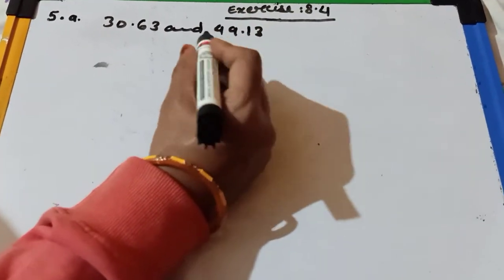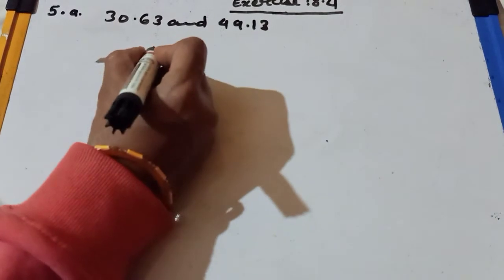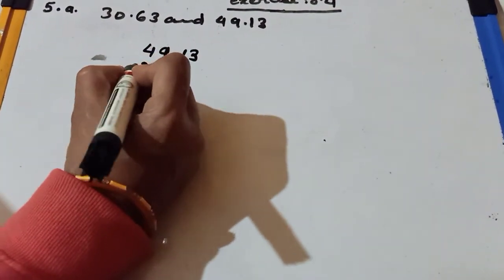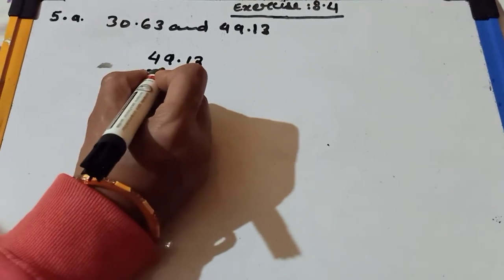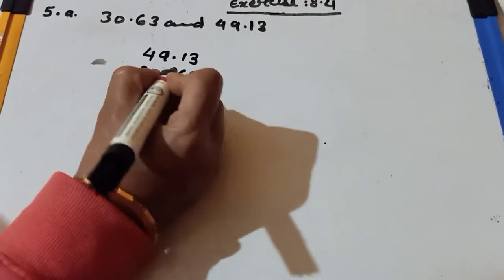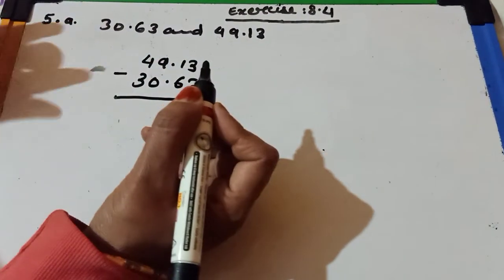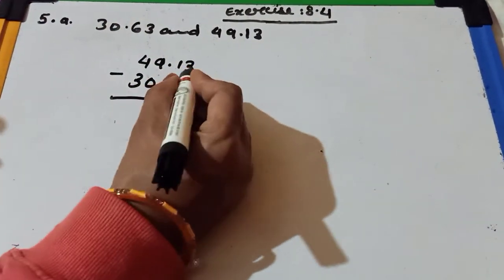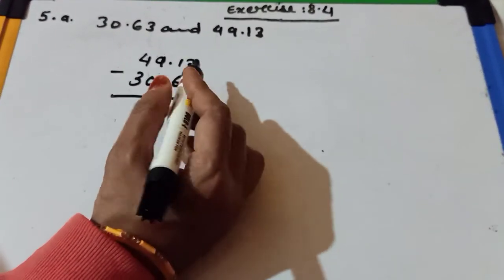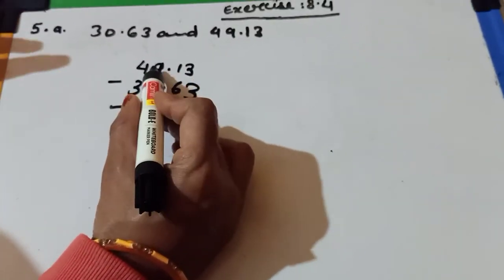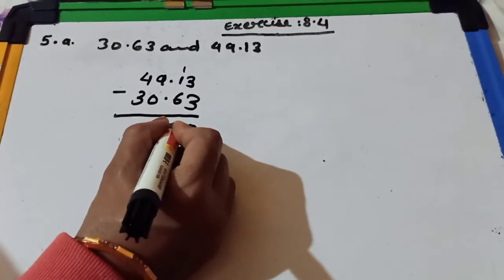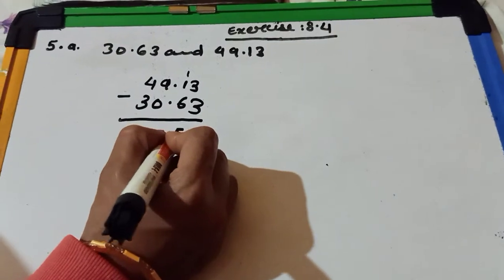Children, first you will see which number is bigger. 49.13 is bigger, so from 49.13 we subtract 30.63. First we arrange in column. It is easy for you. And after that you subtract 3 minus 3 is equal to 0. 1 minus 6 not possible, so we take 1 carry.